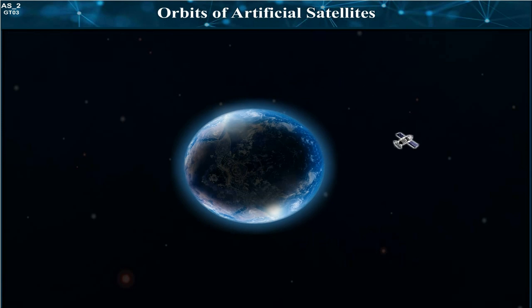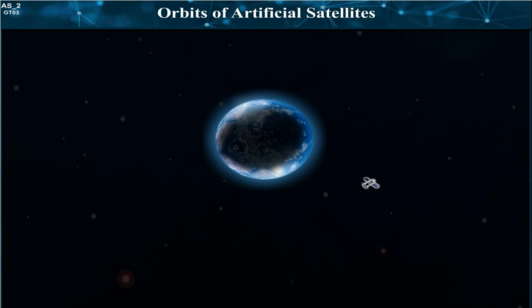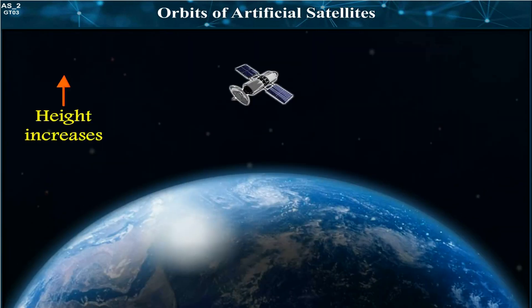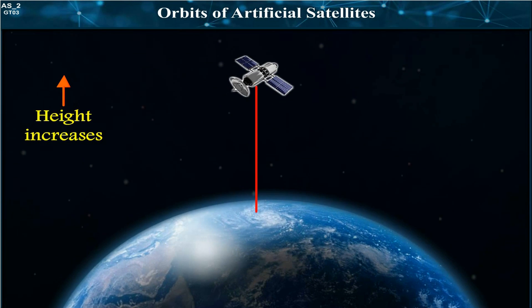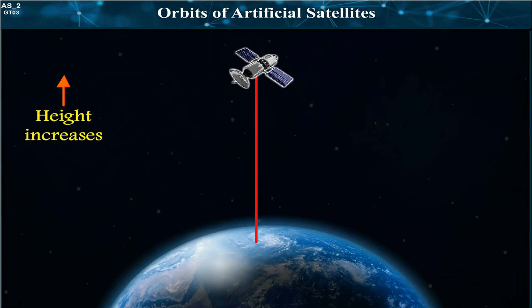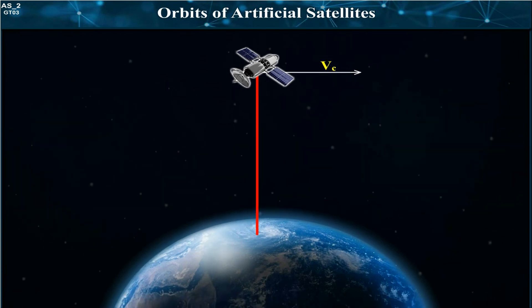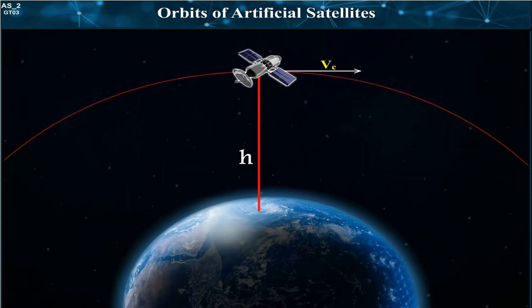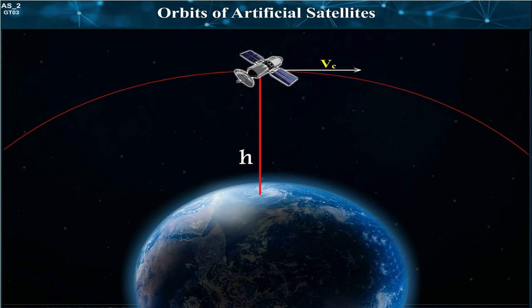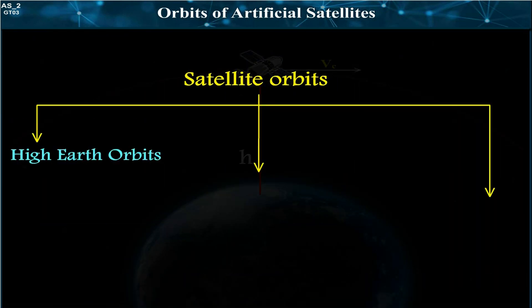It can be seen that the critical velocity does not depend on the mass of the satellite. As the height of the satellite's orbit from the Earth's surface increases, the critical velocity decreases. Depending on the height of the satellite's orbit above the Earth's surface, the satellite orbits are classified as High Earth Orbit, Medium Earth Orbit, and Low Earth Orbit.